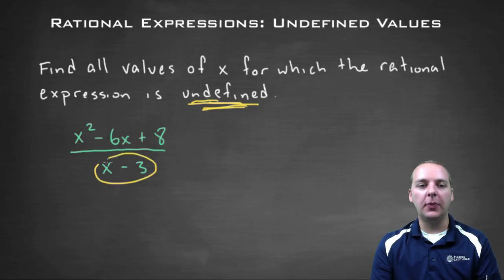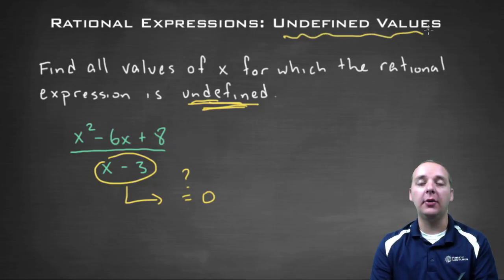So what you have to look out for with these rational expressions is where is this guy equal to zero? Because those are actually going to be bad places, those are not good places. We don't want x to be a certain number that would make this be zero. So if you're looking for the undefined values of a rational expression, here's what you're going to do.